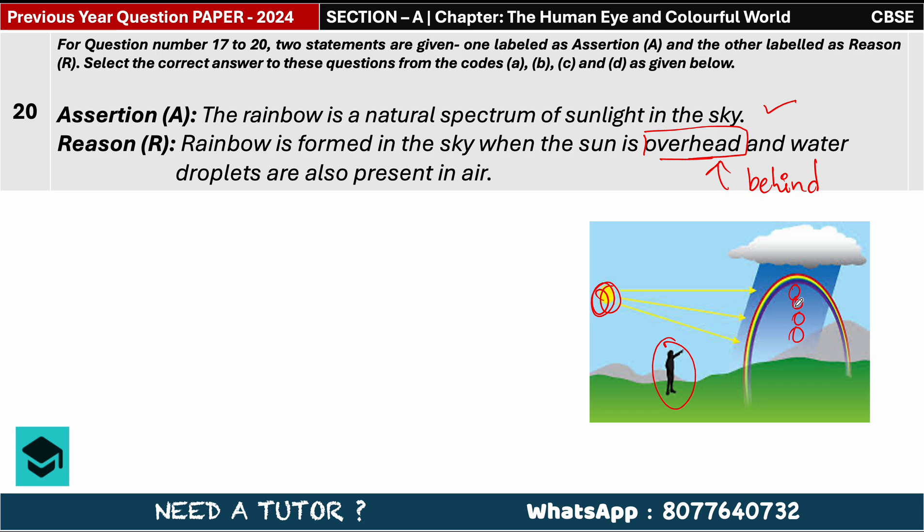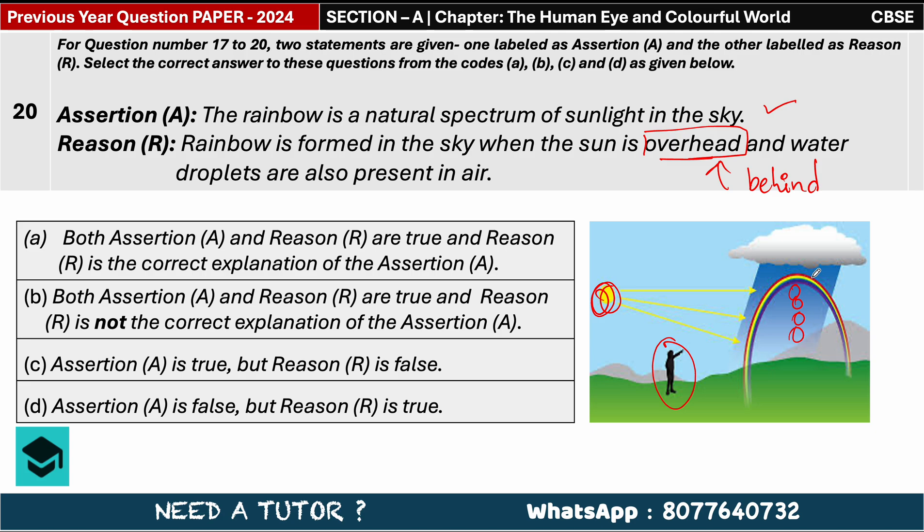Overhead is not possible, it should be behind. So according to this, we come up with the conclusion: assertion is true but the reason is false. So option C is the correct one.